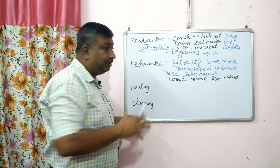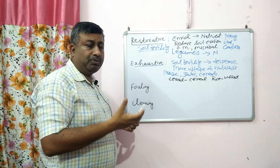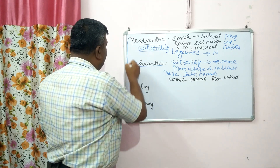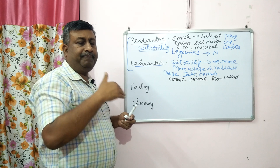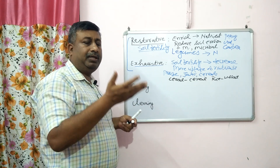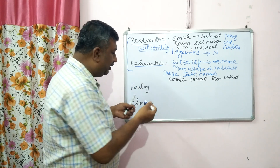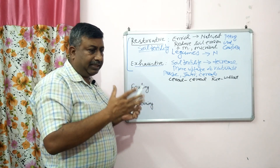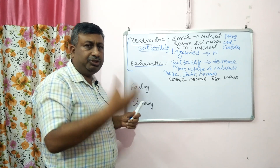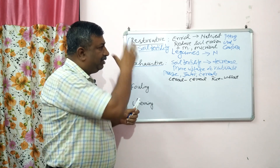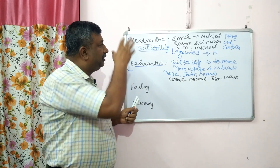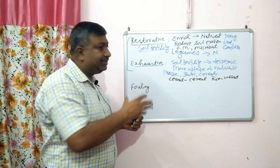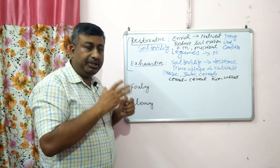But cereals are staple food and we have to grow them. So how can we overcome the impact of exhaustive crops? These crops should be grown in rotation. If we are growing an exhaustive crop, then after it we should grow a legume crop or a restorative crop. A good system may be: exhaustive crop followed by restorative crop — then soil fertility is maintained. When making a good cropping system, we should consider both restorative and exhaustive crops. That's why legume inclusion in a cereal-cereal cropping system is a must.